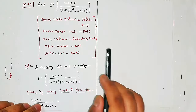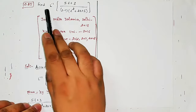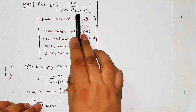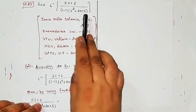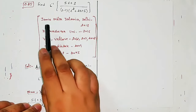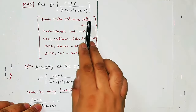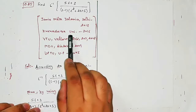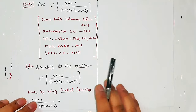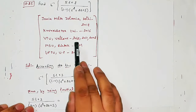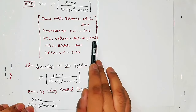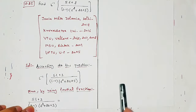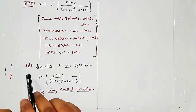Start question number 25: Find Laplace Inverse of (5S + 3) / ((S - 1)(S² + 2S + 5)). This particular numerical is from Jamia Milia Islamia University Delhi year 2018, Kurukshetra University year 2016, BTU Valorium years 2012, 2011, and 2008, MDU Rohtak year 2009, and UPTU UP year 2005. So this is the first question to start.